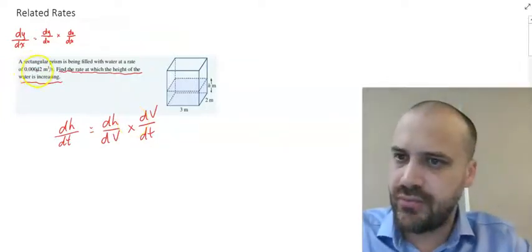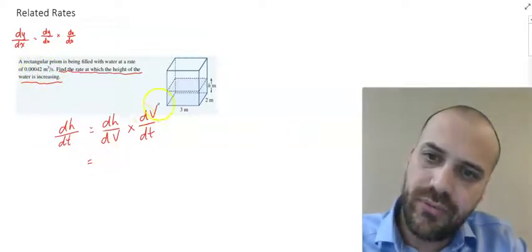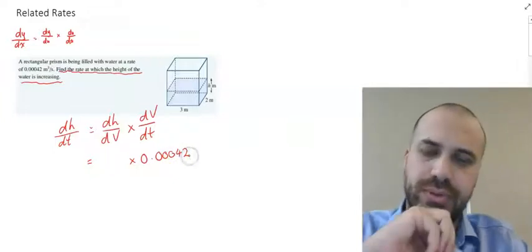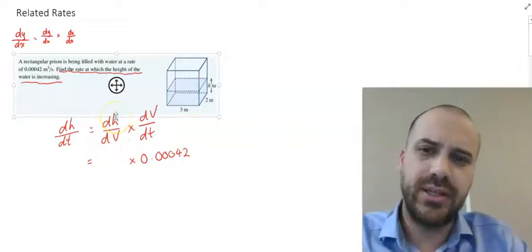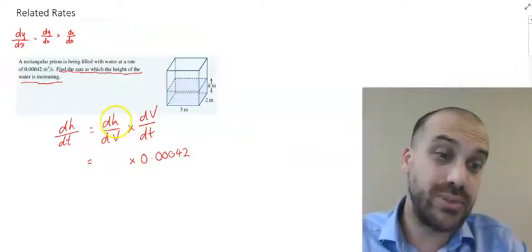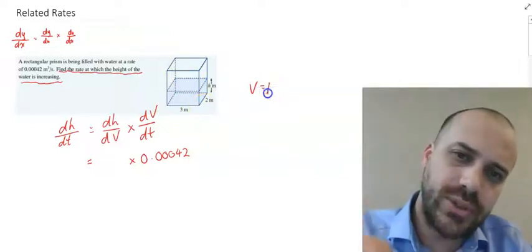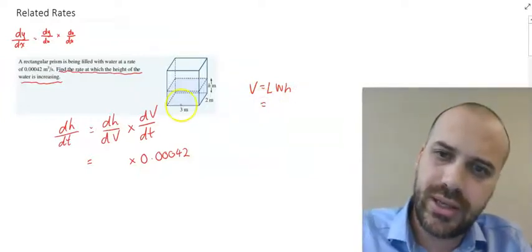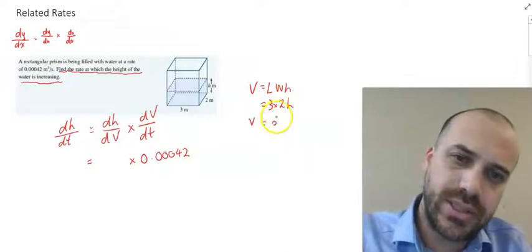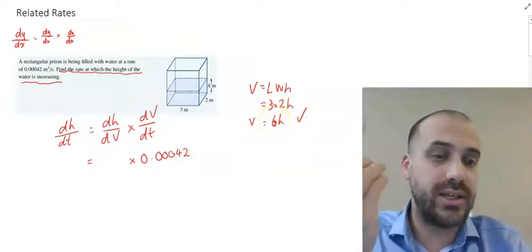We know that volume is increasing at a rate of 0.00042 meters cubed per second, so dV/dt equals 0.00042. We don't yet know dh/dV, so we need to find a relationship between h and V. This is a rectangular prism, and the volume of a rectangular prism equals length times width times height. The length is 3 and the width is 2, so V = 3 × 2 × h = 6h. This is a really important part — we can see that V and h are now related.